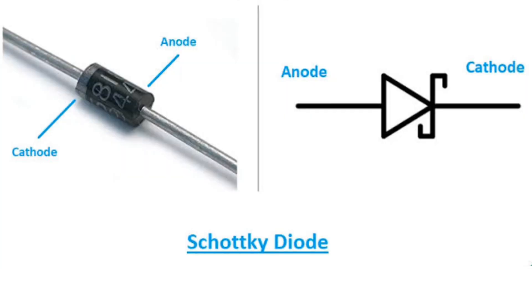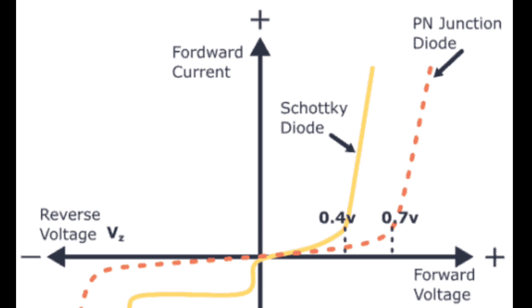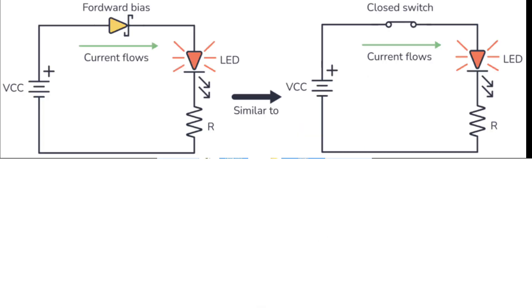Next we have Schottky diode. Schottky diode has a forward voltage drop of 0.15 to 0.45 volts, which is very less compared to the forward voltage drop of a PN junction diode which is around 0.7 volt. Because of this, it has a very high switching speed, and it is used in many applications where high speed is required.